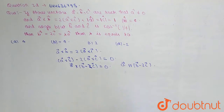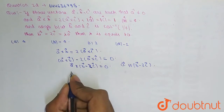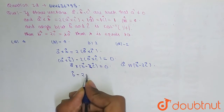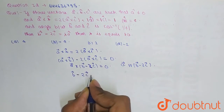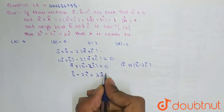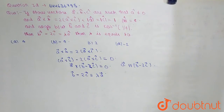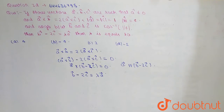When vectors are parallel, we can write one in terms of the other using lambda. So from here, b minus 2c equals lambda times a. Now we simply square both sides.